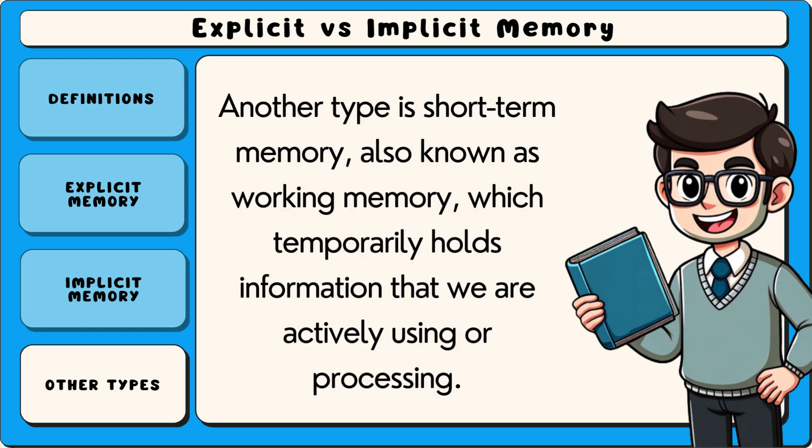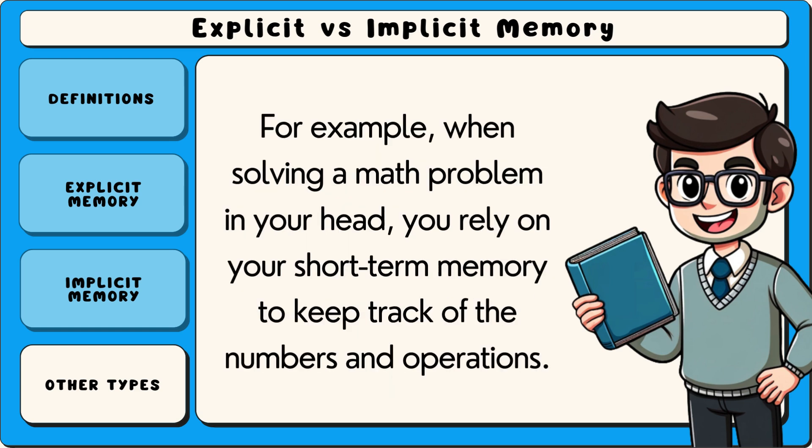Sensory memory allows us to experience the world as a continuous flow rather than as disconnected moments. Another type is short-term memory, also known as working memory, which temporarily holds information that we are actively using or processing. For example, when solving a math problem in your head, you rely on your short-term memory to keep track of the numbers and operations.